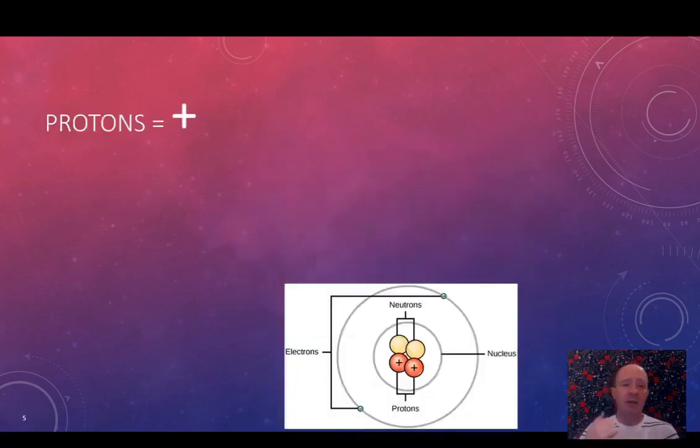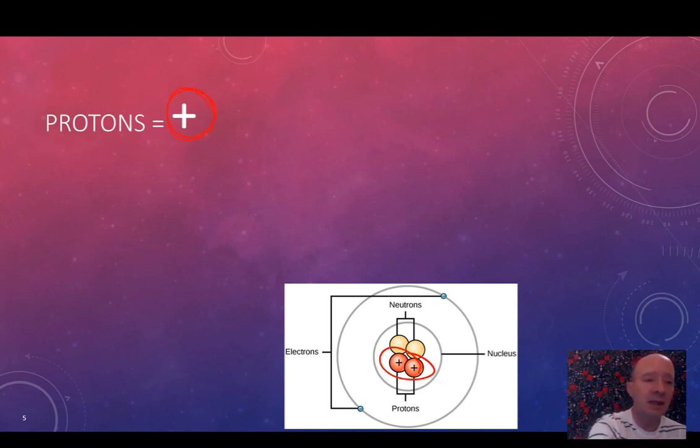So the first one is the proton - that's the orange balls here with the little plus signs on them. Now protons have a charge, have a positive charge. I've got it shown here with this plus sign, and a good way to remember that is: protons starts with P and positive starts with P, or plus starts with P. So that's a good easy way to remember it - protons, positive, protons, plus.